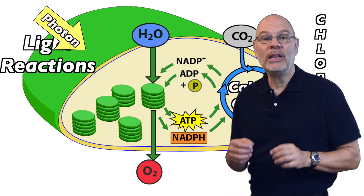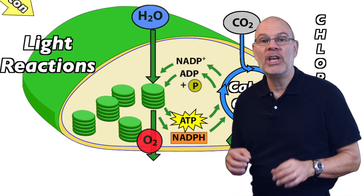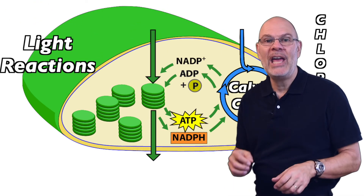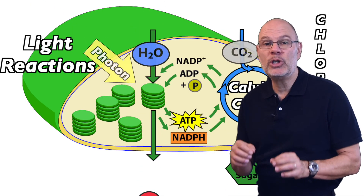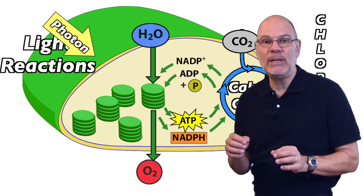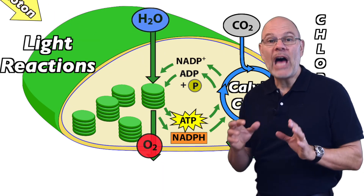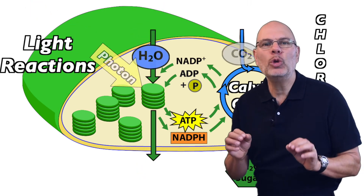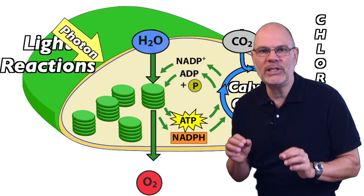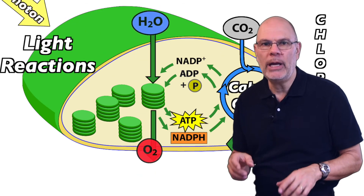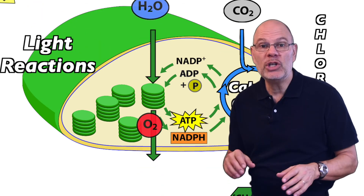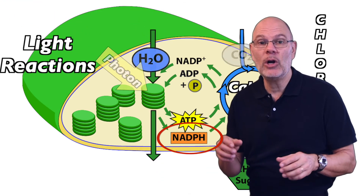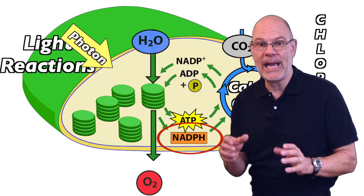We've seen how the light reactions take water and light as inputs and use them to create ATP, with oxygen produced as a waste product. There's only one part missing to our story — the production of the mobile electron carrier NADPH.